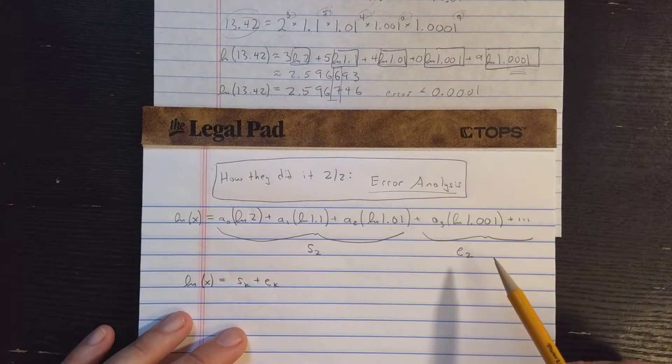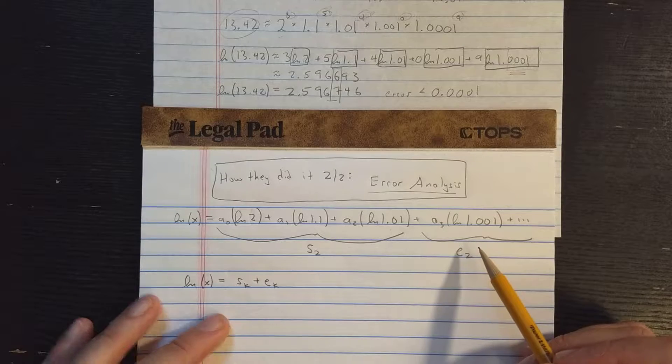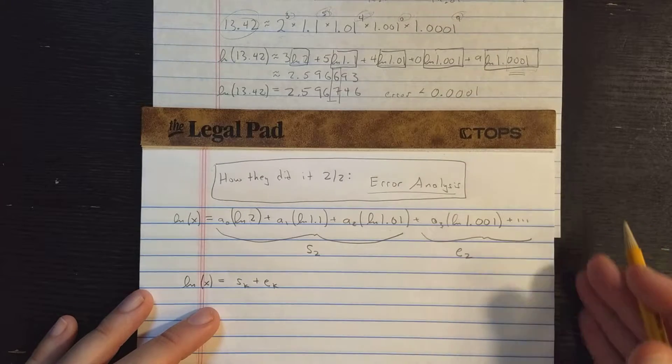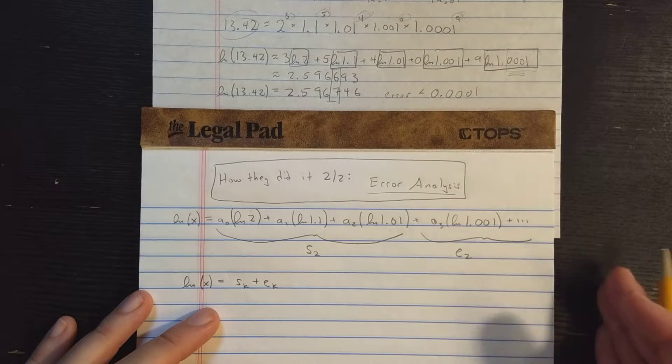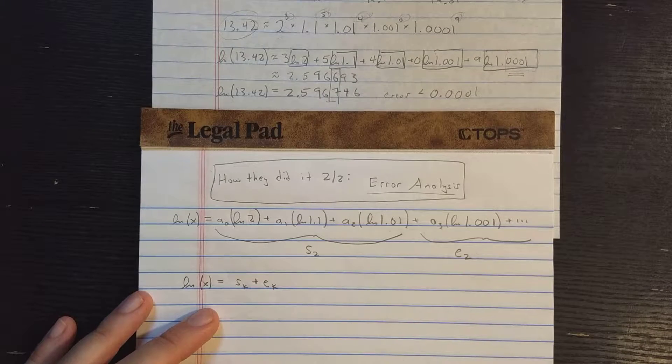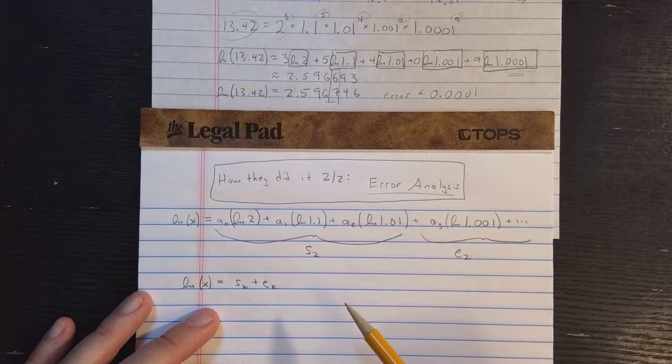Usually calculators use two or three guard digits, which they never show you in order to control that machine error. Okay, so let's focus just on the theoretical error.